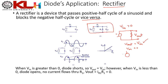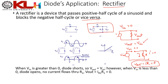In reverse bias the diode is replaced with an open circuit. The current through the resistor is zero (i = 0). Since V_out = i × R, V_out = 0 when the diode is reverse biased.